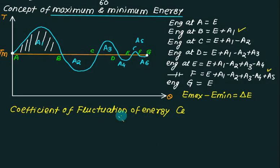The coefficient of fluctuation of energy, CE, is given by the maximum difference between energy, E max minus E minimum divided by work done during the cycle. Or this simply equals to delta E divided by work done.